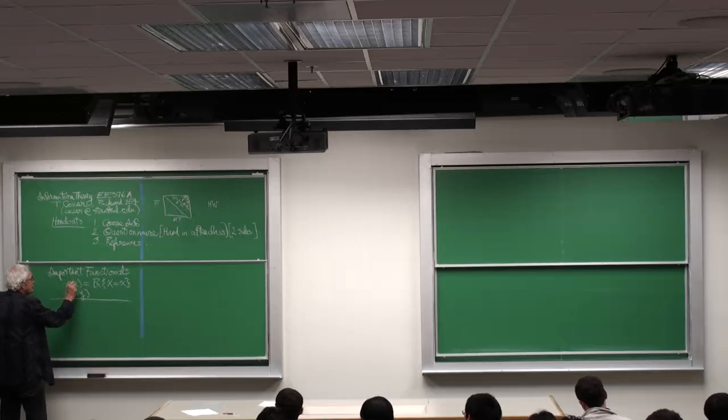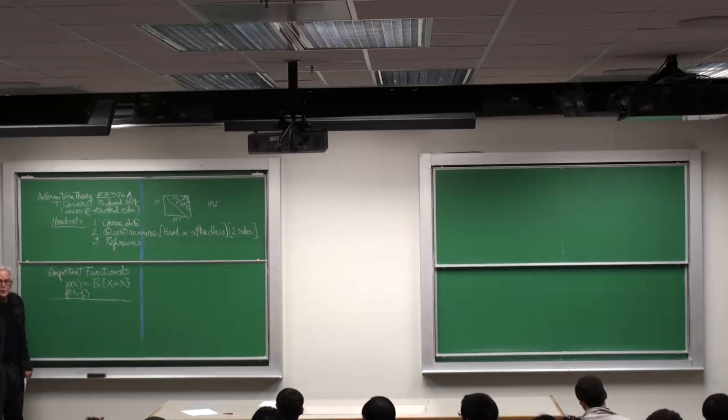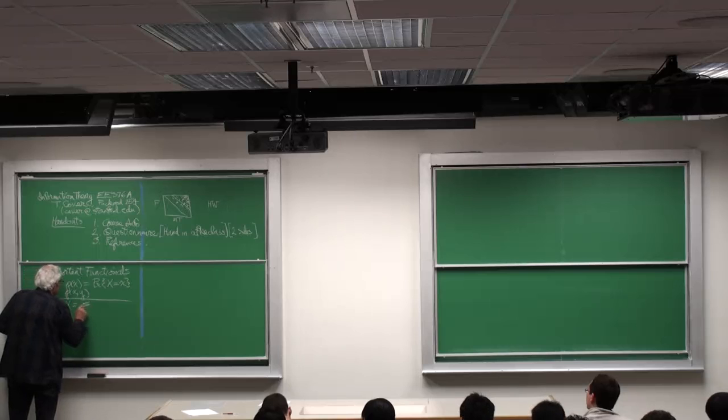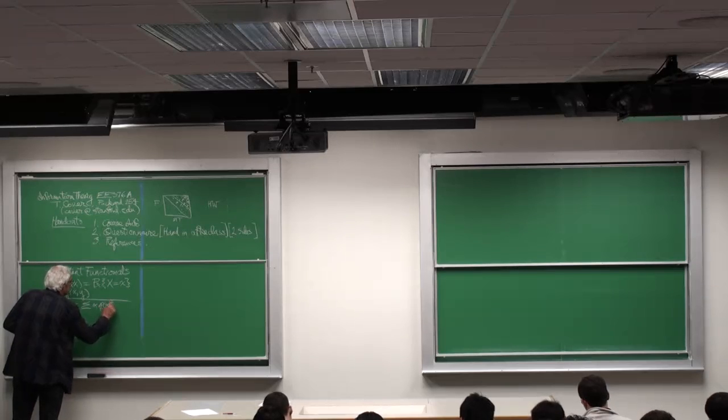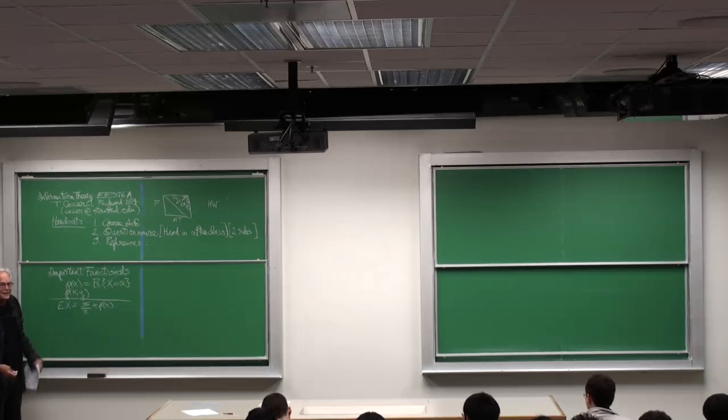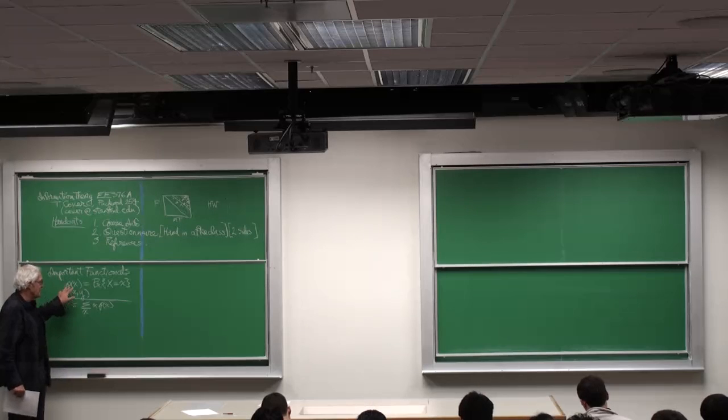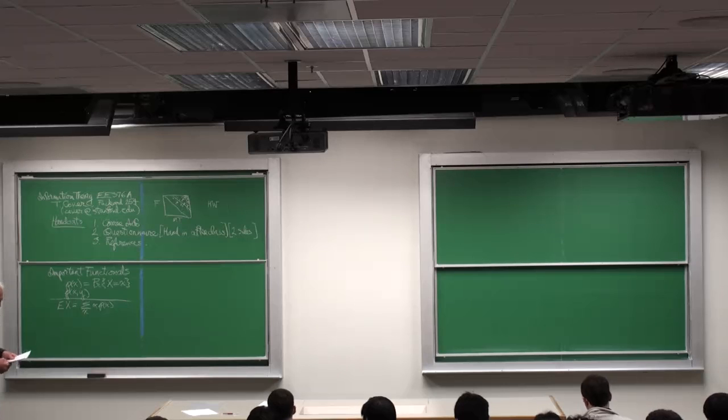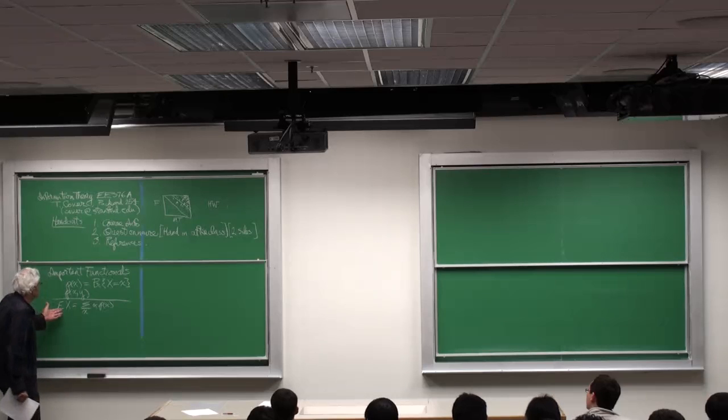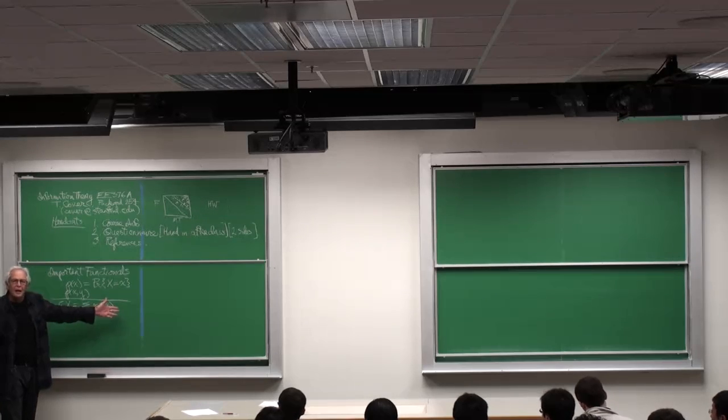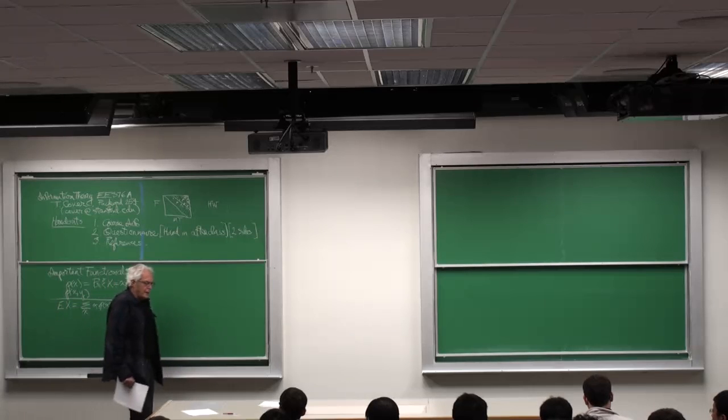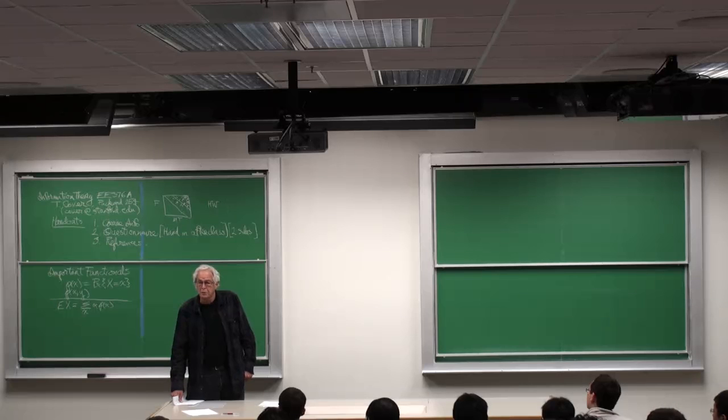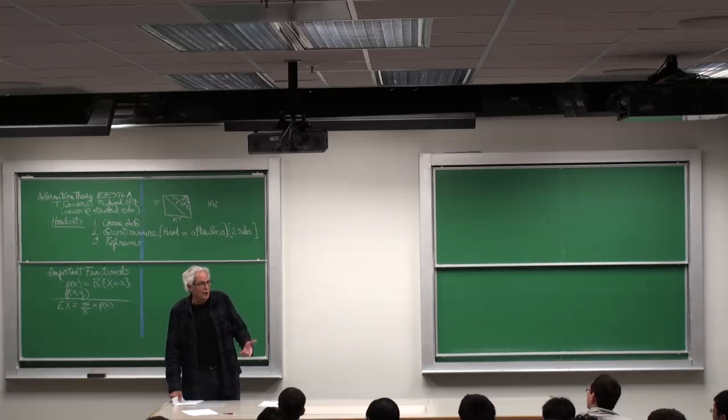We all know that there are some important functionals related to these underlying distributions. One of them is the expected value. Expected value of X is defined to be summation of x times p(x) over all x. It has its integral counterpart - if this is a probability density, then this is the integral of x df(x). Why is this of particular interest? The reason is because it's the answer to a large number of fundamental questions, and the biggest question it's the answer to is the law of large numbers.